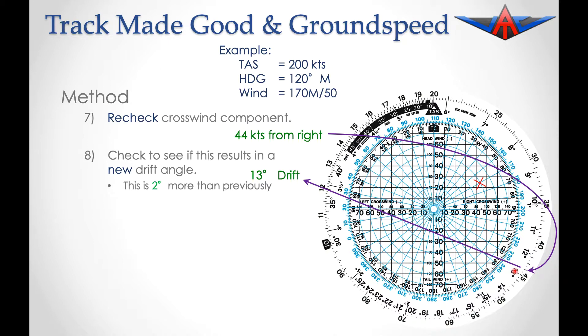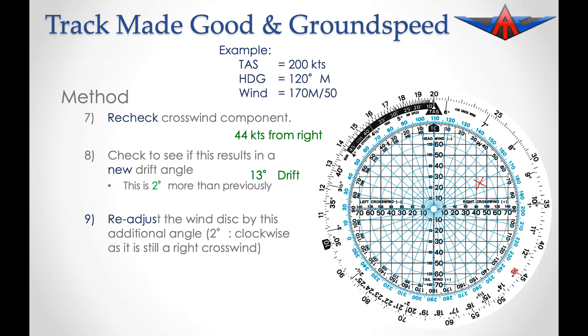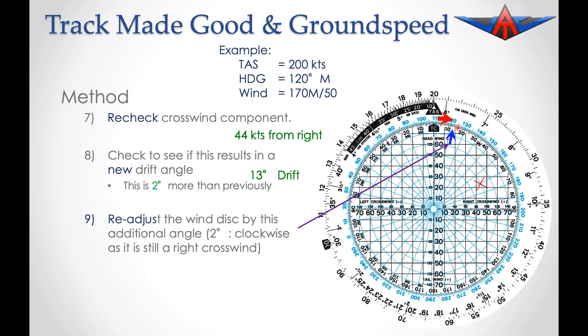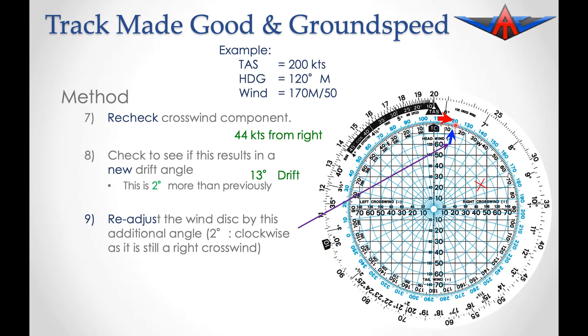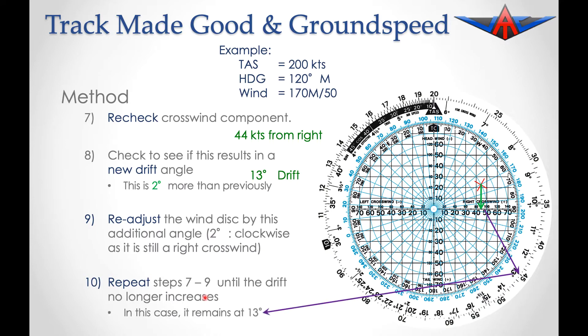Once again, we need to make a correction, and we may need to readjust this a number of times. In this case, we'll rotate a further two degrees around to equal the 13 degrees of drift. Once again, this little X has shifted a tiny bit, so we're going to check it again. We now have nearly 45 knots of crosswind, which equates to 13, which is the same as before, so we don't need to make any further modifications.